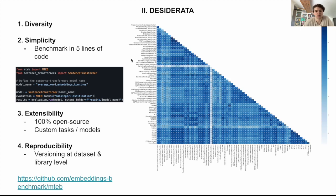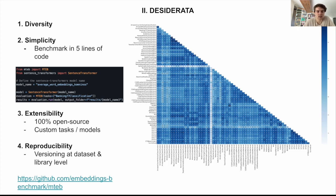We also wanted it to be as simple as possible, and this code snippet shows how you can benchmark on the Massive Text Embedding Benchmark in like five lines of code. It's also super extensible — everything's open source and adding a new task or dataset requires just a few lines of code, and even adding a new model. In this code snippet we just load sentence transformers, which is a single line of code. For other models not compatible with sentence transformers, it's maybe five or six lines of code to make them compatible. And we wanted everything to be very easy to reproduce, so there's versioning both at the software and dataset level, making it easy to go back in time and reproduce any results, including those from this paper.